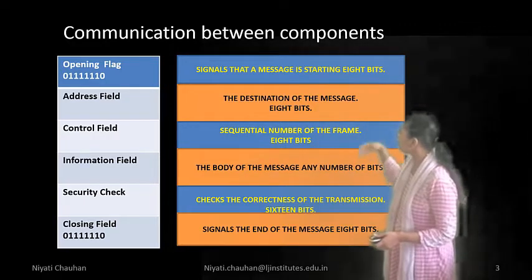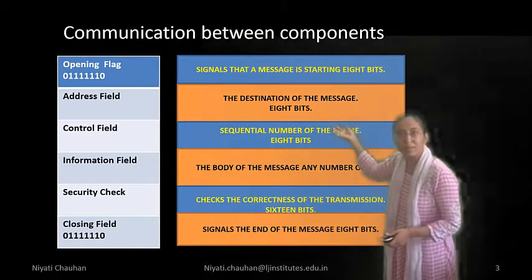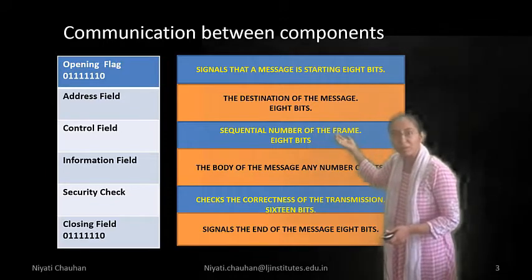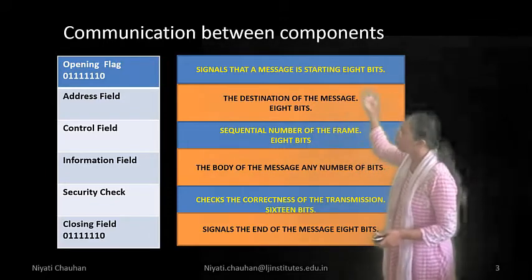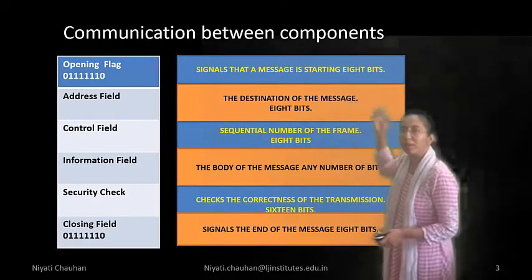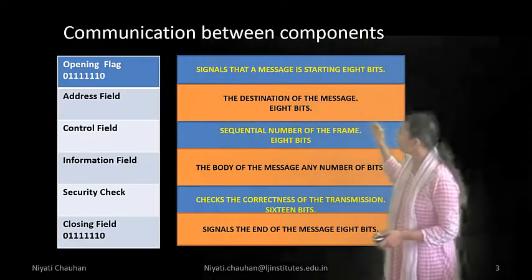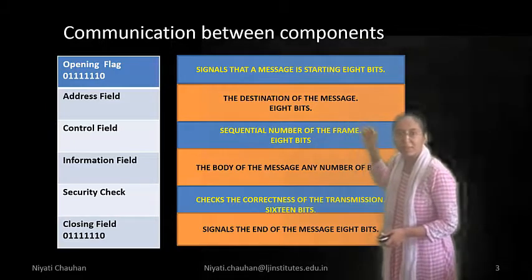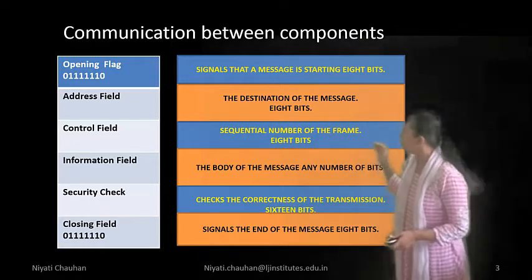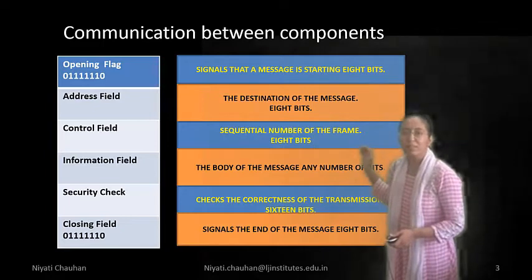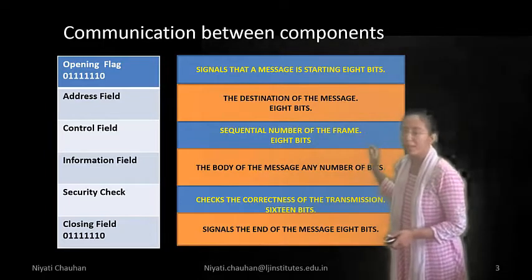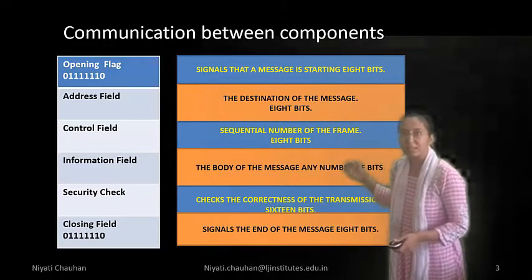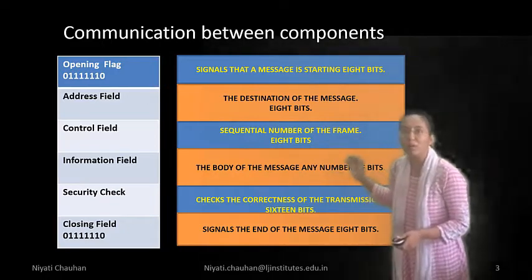Here we are sending our message in digital form. First the opening flag, then after the address field. In the address field, our message is sent to the destination. Then the control field. In the control field, the sequence message of the frame is 8-bit, so here we verify whether our message is in sequential form or not.